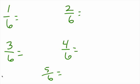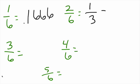With the 6s, we only have to memorize maybe 2 new answers. 1 over 6 is 0.1666... 2 over 6 is the same thing as 1 over 3 — reduce it: 2 divided by 2 is 1, 6 divided by 2 is 3. We already know that 1 over 3 is 0.33, so we didn't have to memorize anything new.